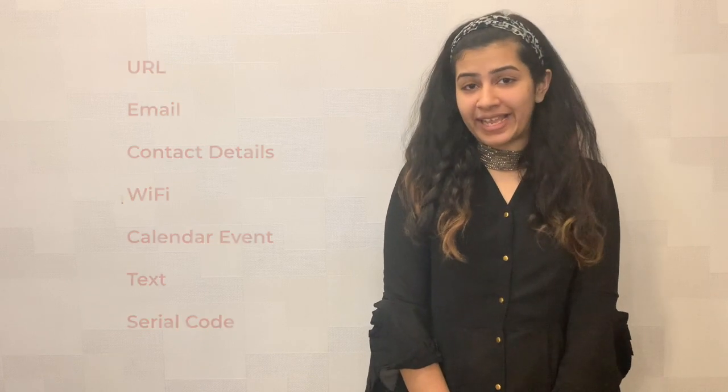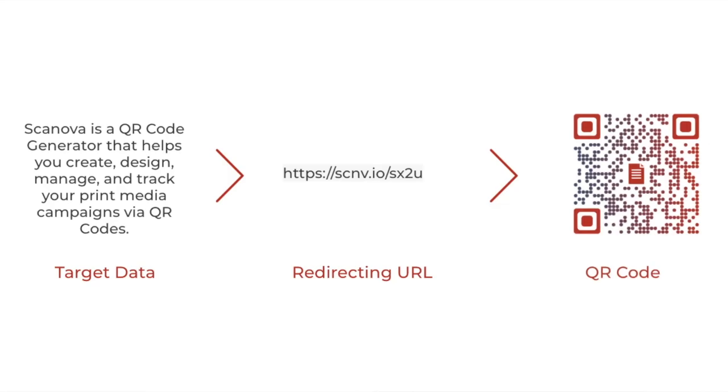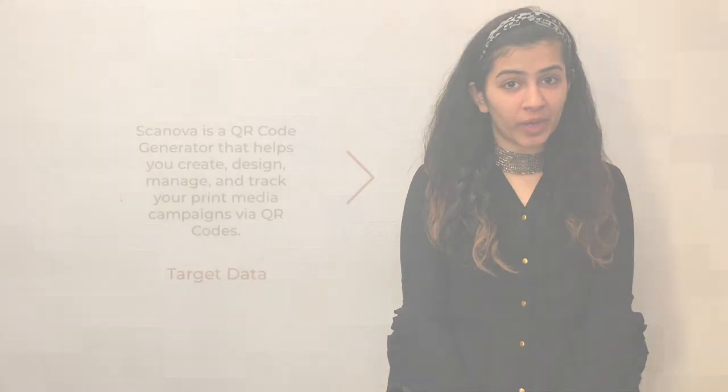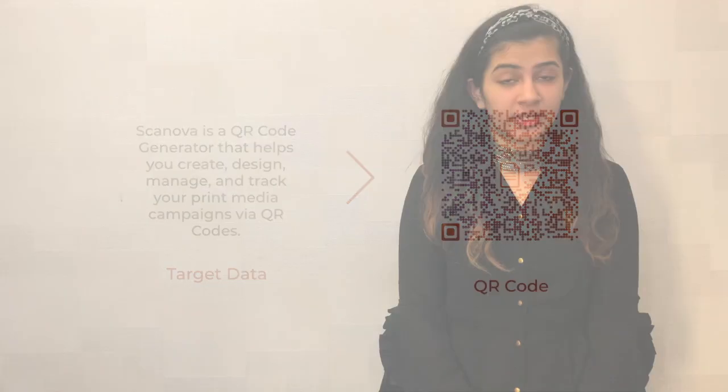You might be thinking that a static QR code is just similar to a dynamic QR code, but no — there are three fundamental differences. The first fundamental difference is that the data is hard-coded directly in a static QR code. Unlike a dynamic QR code where you store a redirecting URL which then takes you to the target data, in a static QR code the target data is encoded directly in the QR code.